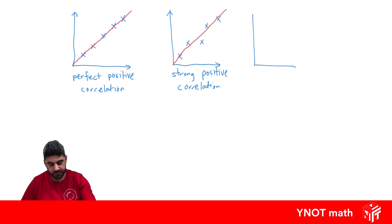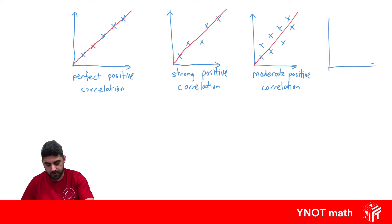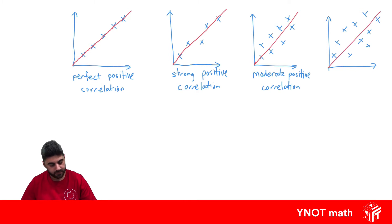If we have something like this, where it's a bit more scattered, this would be an example of moderate positive correlation. We could also have something like this, where it's really spread out but still showing some kind of relationship in the positive direction. And this would be a weak positive correlation.